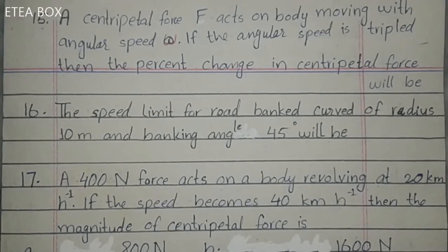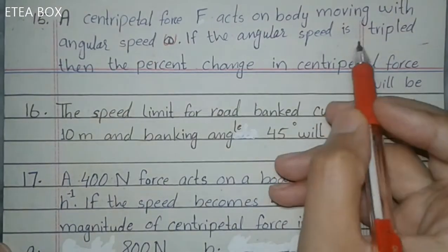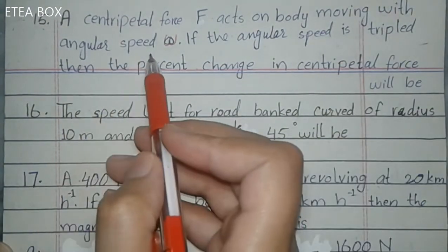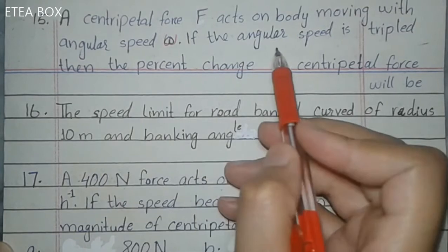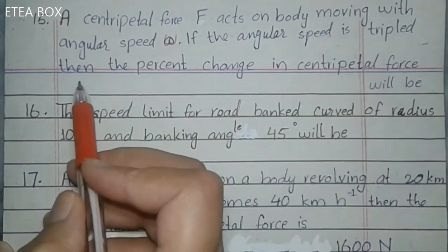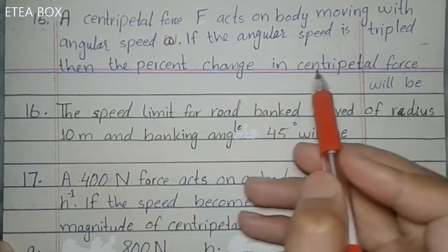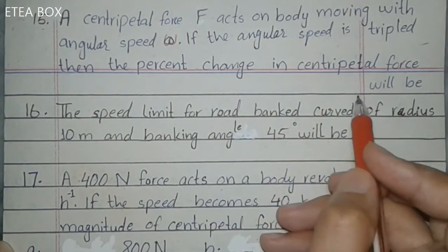Assalamu alaikum students. Let's discuss the remaining MCQs of circular motion, Chapter 5. MCQ 15: A centripetal force F acts on a body moving with angular speed. If the angular speed is tripled, then what will be the percentage change in centripetal force?